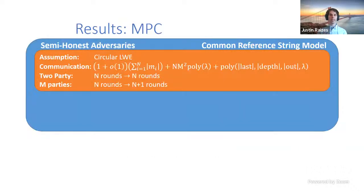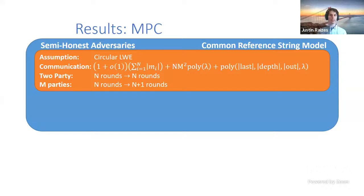Not all functions can be computed with less communication than the size of the inputs, but a rich class can. For example, consider two chess-playing AIs: the AIs themselves might be large, but playing chess only requires communicating the next move. For our first result, we consider semi-honest adversaries in the common reference string model, where parties start with a string sampled by a trusted party.